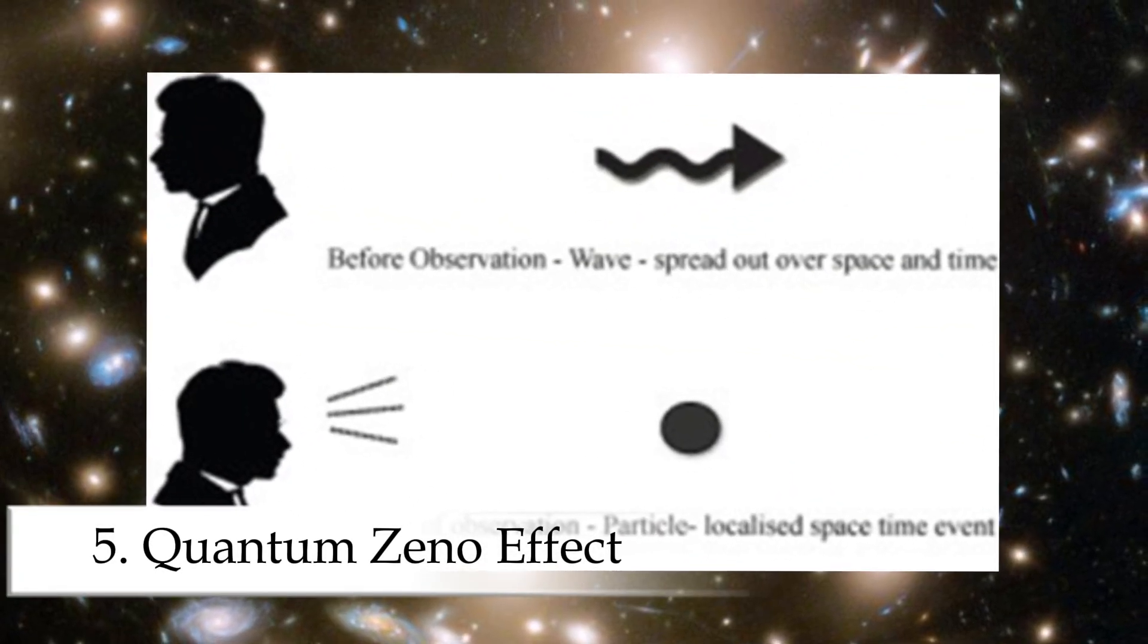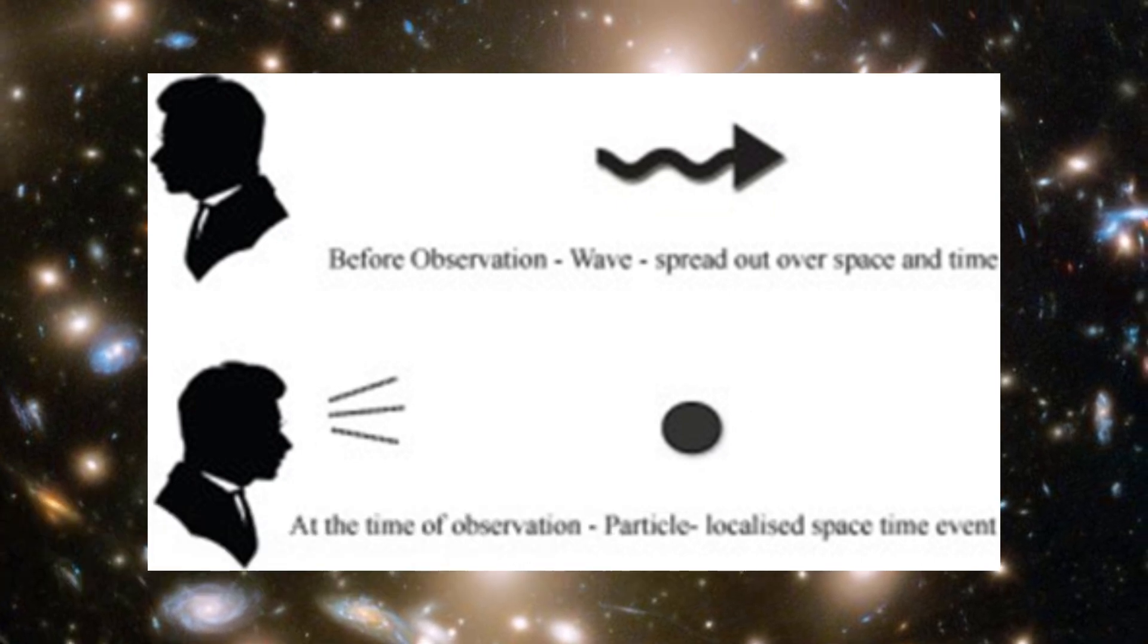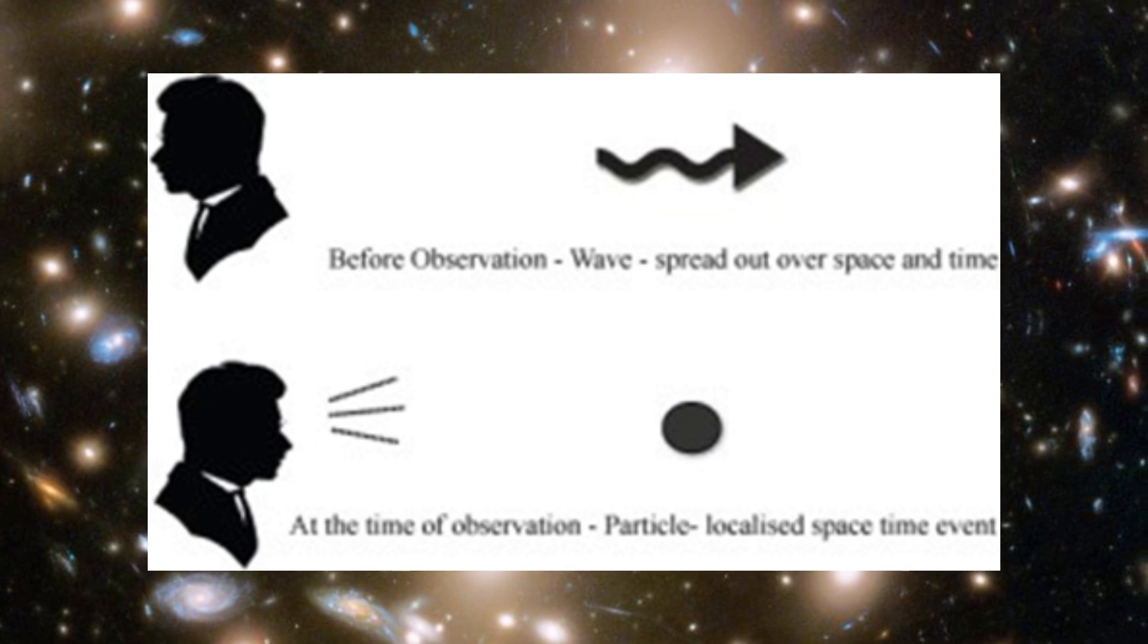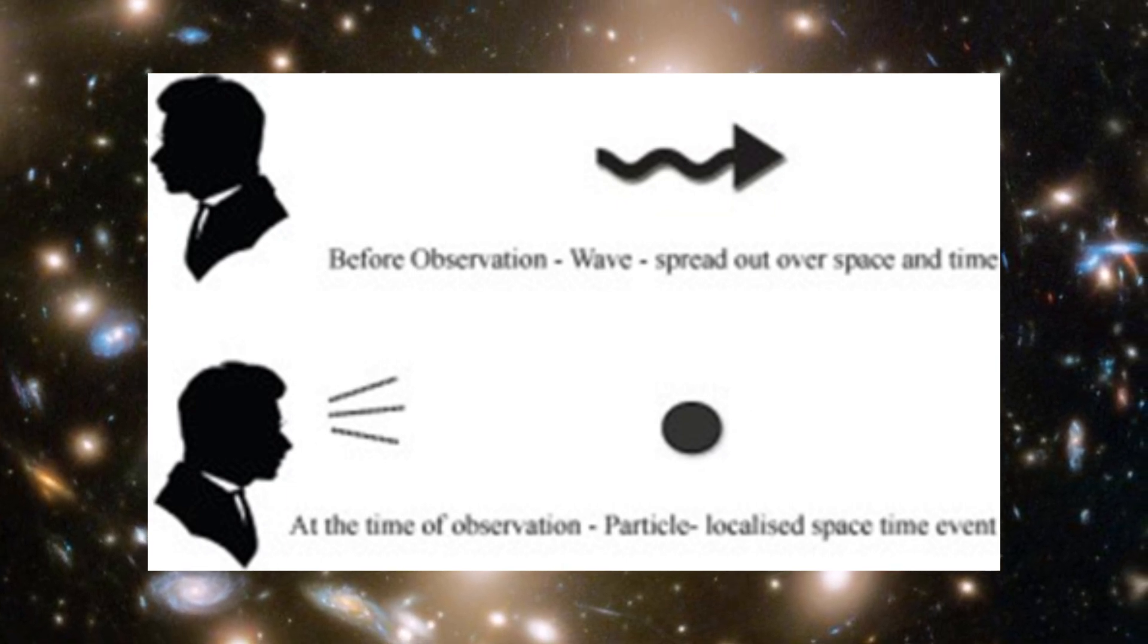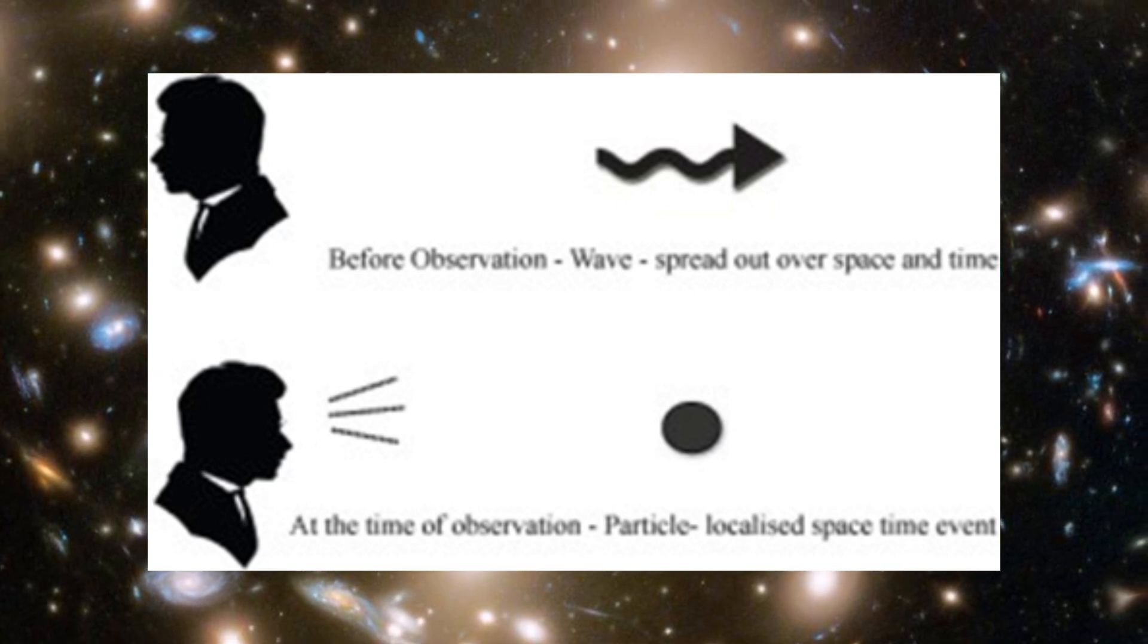Number five, the quantum Zeno effect. Imagine checking a cake in the oven every five seconds. You're watching it so much it never seems to bake. That's kind of what happens in the quantum world.